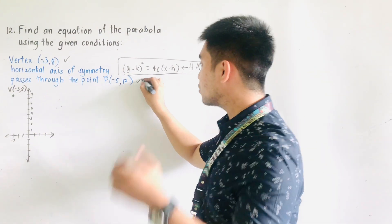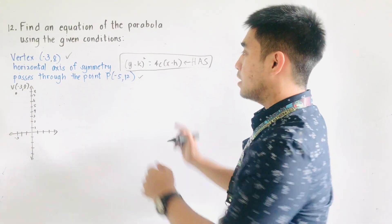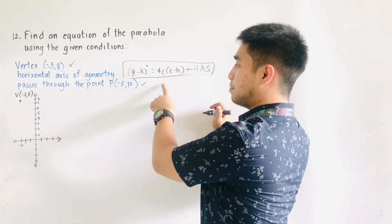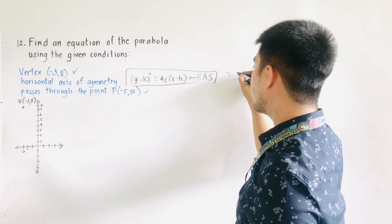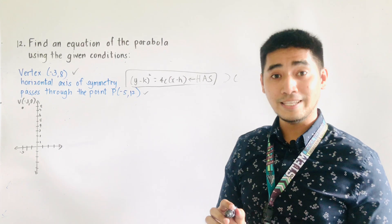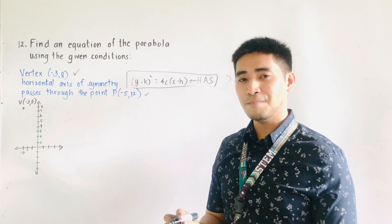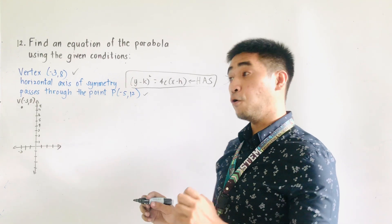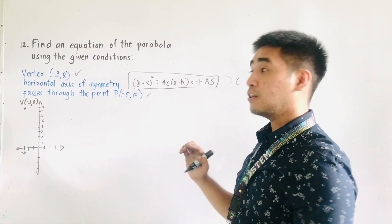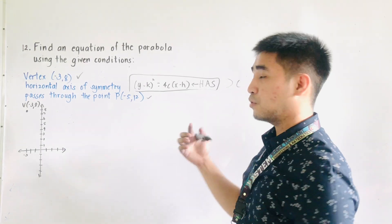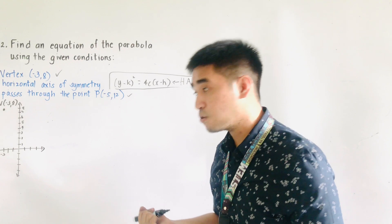But if we are dealing with vertical axis of symmetry, the formula is x minus h, quantity squared, is equal to 4c times y minus k. Do not be confused — this is the one that we will be using since the condition is that we are given horizontal axis of symmetry. For the third condition, it passes through the point negative 5 and 12. If it is horizontal axis of symmetry, our parabola will open to the left or to the right, not upward or downward.